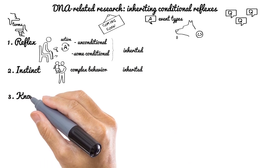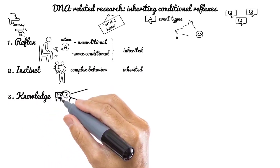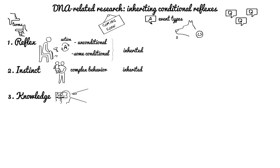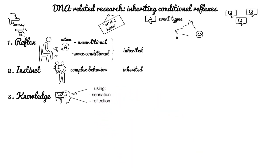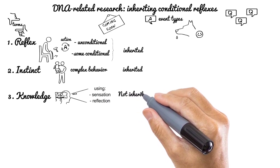And finally, knowledge is an aim and result of human cognition for simplicity. While human cognition, oversimplified, is a process of perceiving, analyzing, and keeping primarily in human's mind external and imaginary information by using our sources of experience: sensation and reflection. Knowledge, apart from reflexes and instincts, is not inherited.